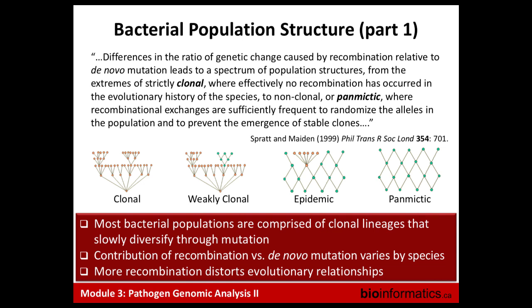There are general groupings of population structure in bacteria. Extreme clonal means diversity comes largely from vertical mutation. Weakly clonal is largely the same but there can be new diversity brought in horizontally. Epidemic means lots of relatively rare types circulating due to recombination, but suddenly one gets lucky finding a host and there's a proliferation of similar clones — clonal expansion. Panmictic means you rarely see the same sequence twice because it's highly recombinogenic and everything is rare.